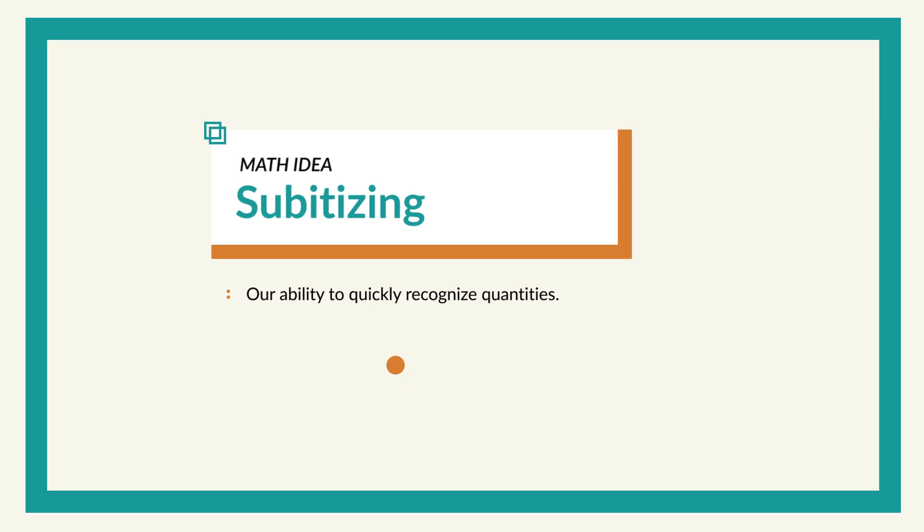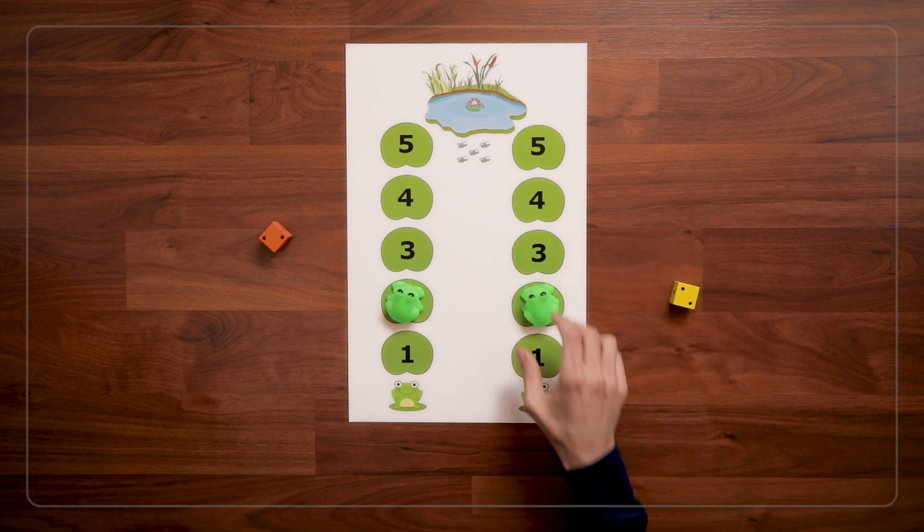And kids get lots of practice subitizing in this game because when they roll, they really want to know immediately what number they got so they can move their frog. So keep rolling and hopping until you get to the pond.